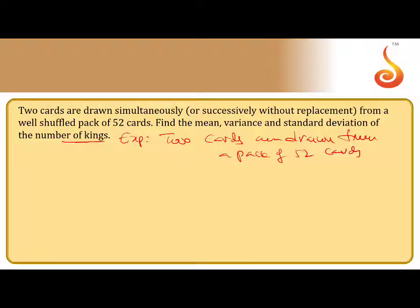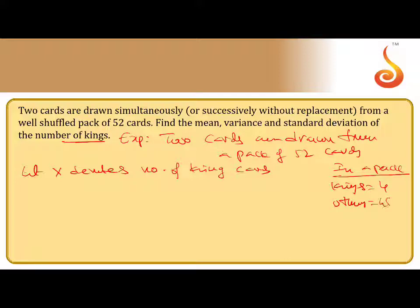We want to take probability for king cards. Let X denote number of king cards. How many king cards in a pack - zero number of king cards. In a pack, generally you should know about that, king cards 4, others 48 here, non-kings. Now X denote number of king cards, range of X is 0 king, 1, 2.